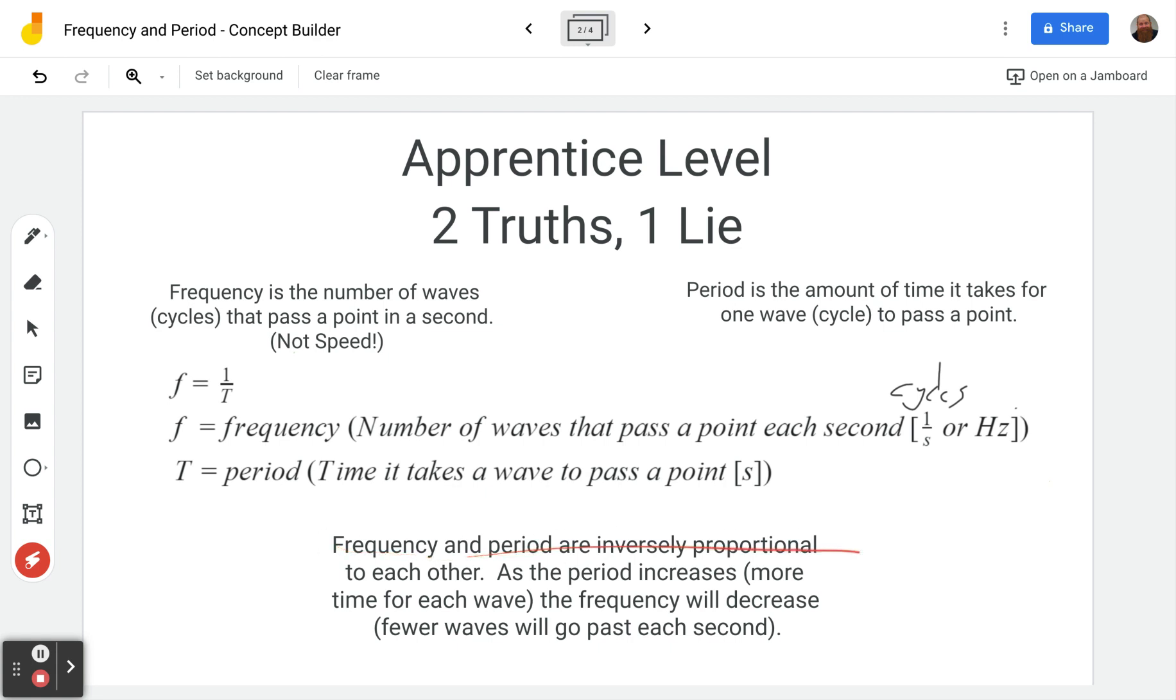These are inversely proportional to each other. In other words, as the period increases, as it takes more time for each wave or each vibration, then the frequency will decrease. If it's taking more time for the waves to get there, then fewer waves are going to go past each second, because each one's taking longer. So using that information, that should get you through the apprentice level. If not, leave a question in the comments below.